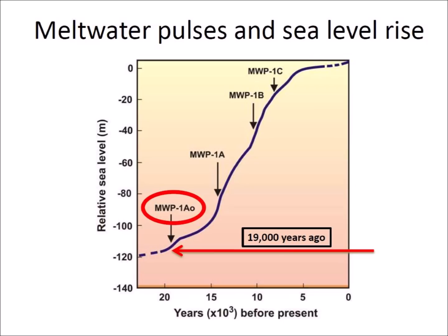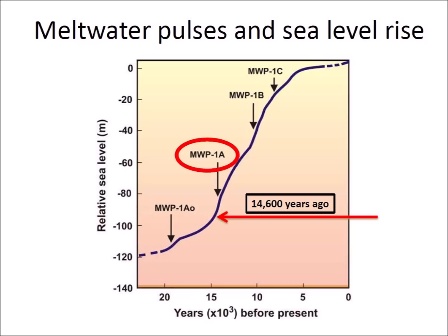The meltwater pulses started about 19,000 years ago, at which time ocean levels rose 10 to 15 meters in less than 500 years. A clearly defined increase of sea level rise occurred between 14,600 to 13,500 years ago, called Meltwater Pulse 1A. This water pulse increased sea level by 16 to 24 meters. The meltwater is believed to have come largely from North America, because sediments from East Antarctica showed that the ice there began melting about 3,000 years later.